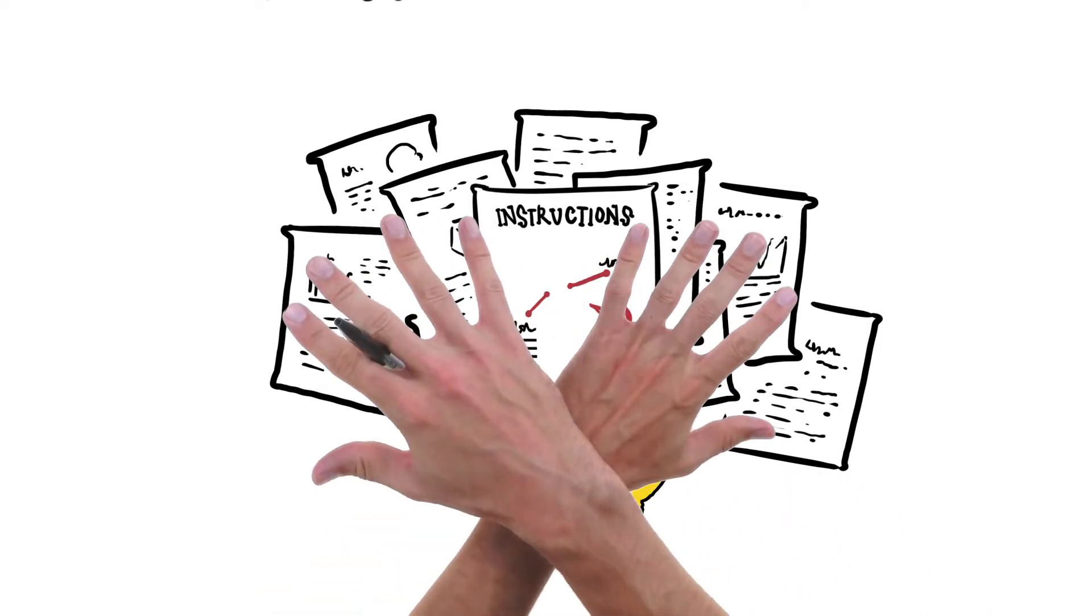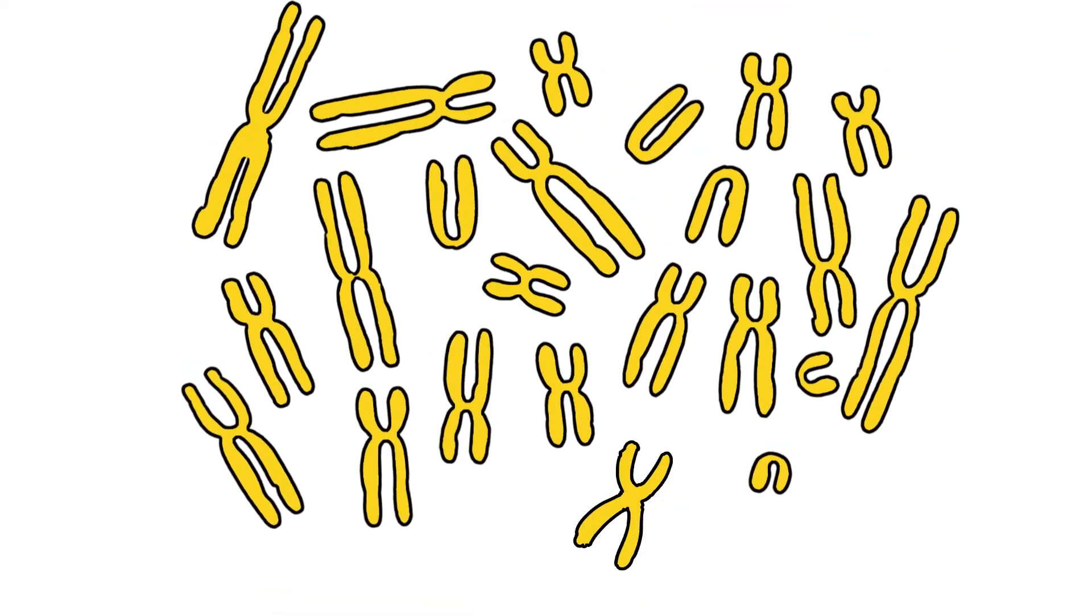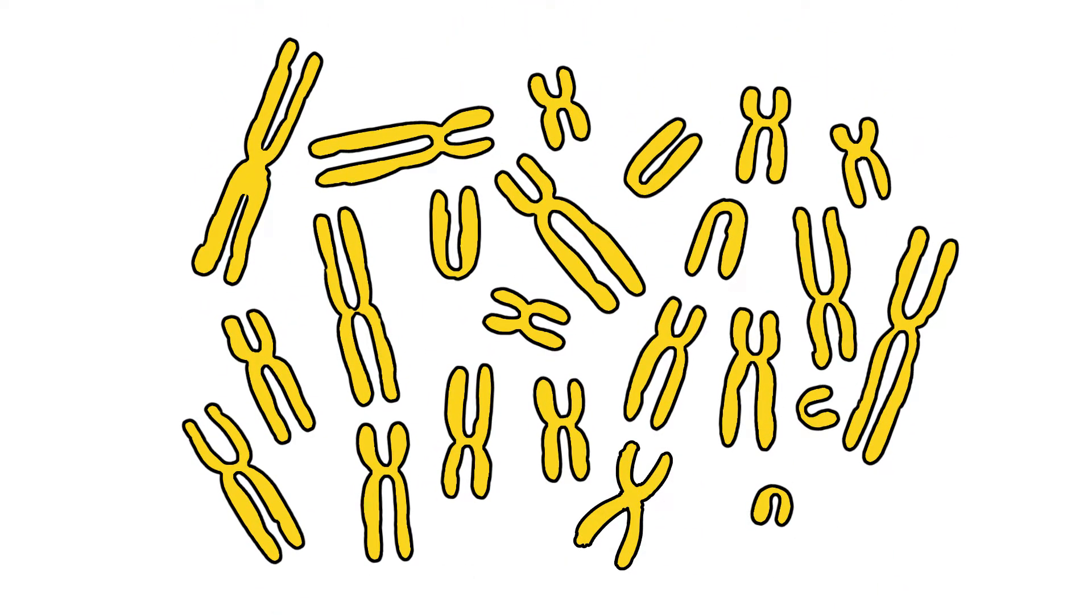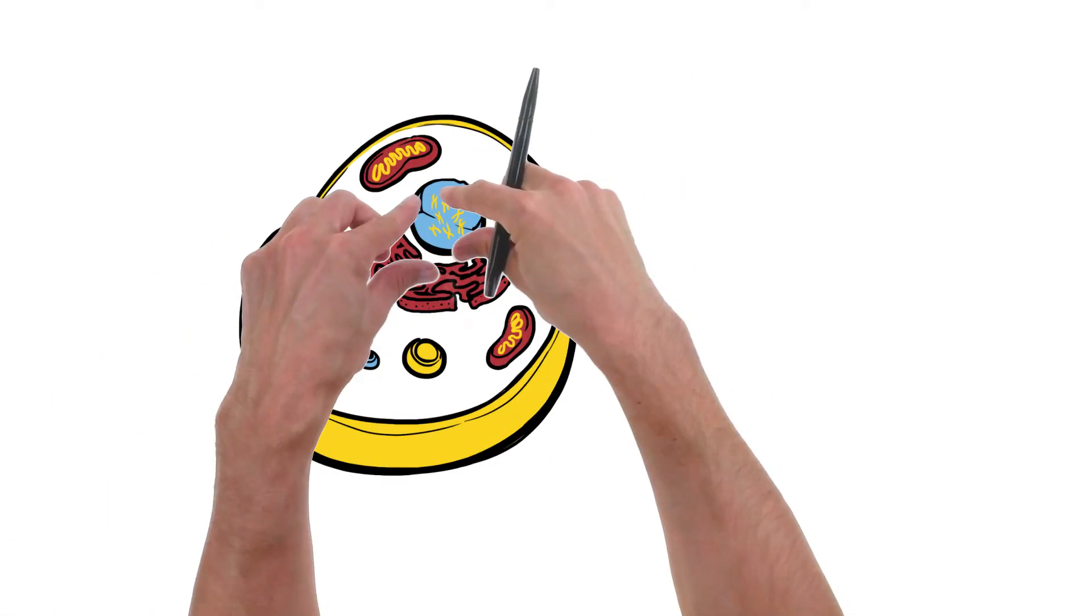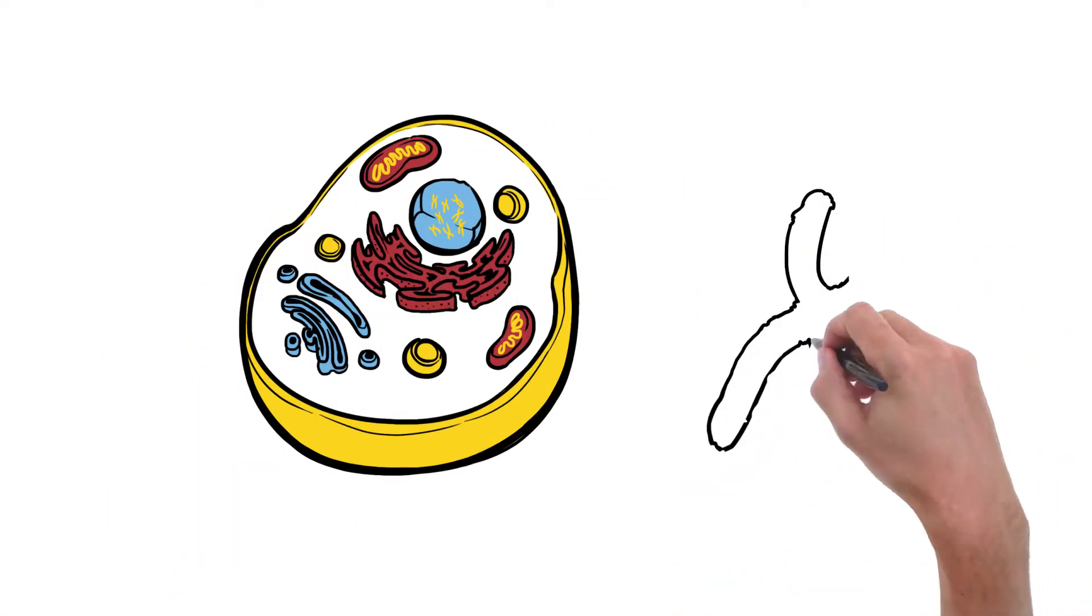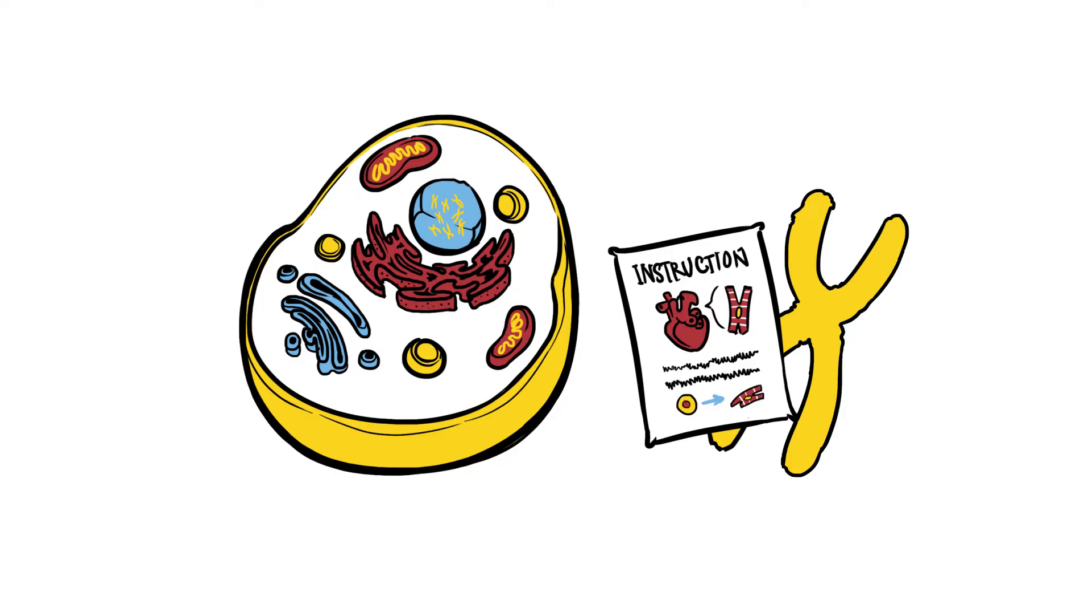Each person is born with thousands of genes organized in a set called the human genome. These genes control our thousands of traits, all packaged up neatly into cells of your body, ready to be opened and read just like an instruction booklet.